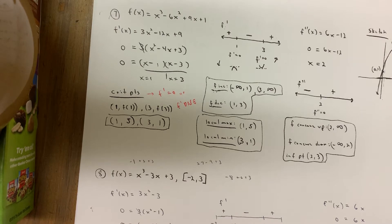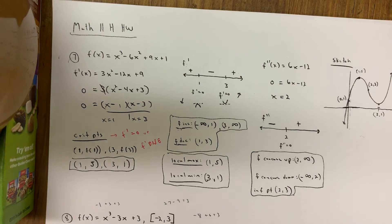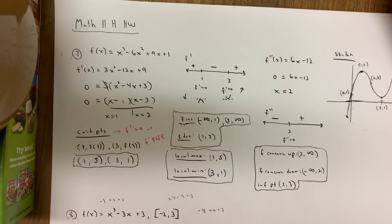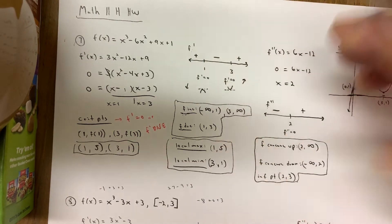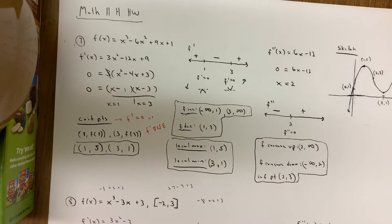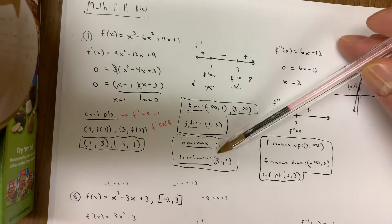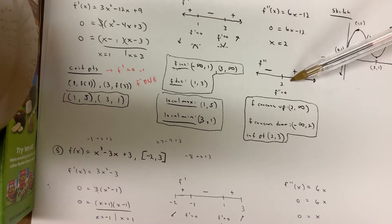A critical point of function f is where f prime equals zero or f prime does not exist — so important. Sometimes they just want critical x-values; plug them back into the original to get critical points. Any type of point, you always plug into the original function. The f prime line tells you where f prime is positive or negative, which tells you where f is increasing or decreasing.